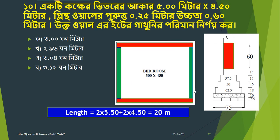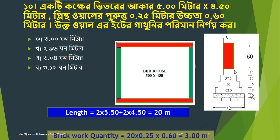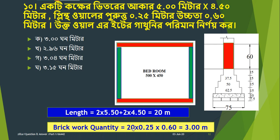This is bigger quantity. Big worker quantity. This is the length into height into thickness. You can find length into thickness into height range. Height weighs 3.